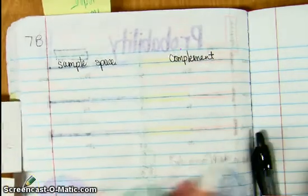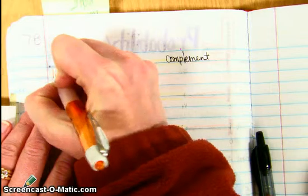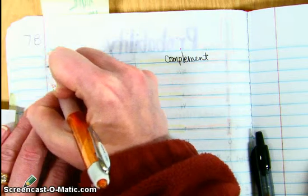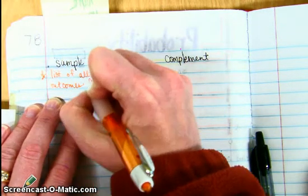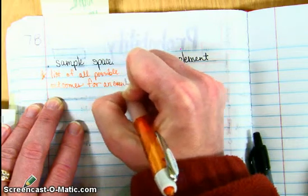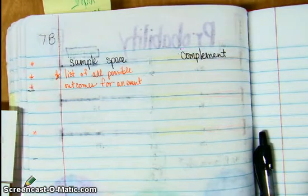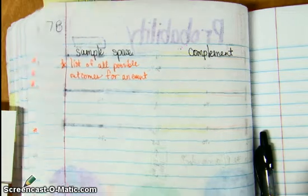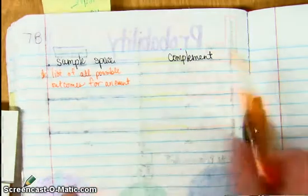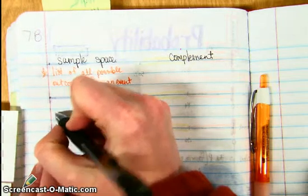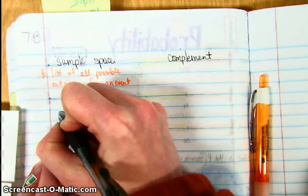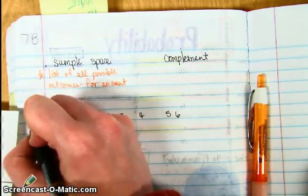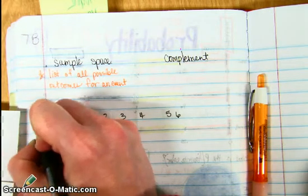So a sample space is the list of all possible outcomes for an event. And you will see that when you're dealing with compound events, where you're dealing compound, meaning you've got more than one event occurring in your probability experiment. You may see this, let's say we were rolling a die with the numbers 1, 2, 3, 4, 5, 6. And then you may see a coin going down here with heads or tails.